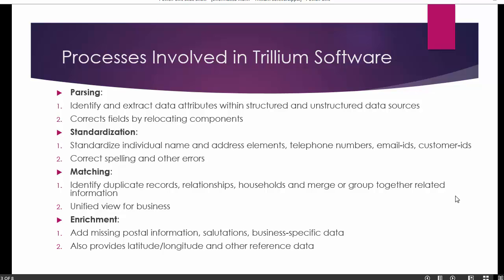The four basic processes are: first is parsing, second is standardization, third is matching, and fourth is enrichment. During the parsing process, records are identified and extracted for the data attributes. It works not only for structured data sources like RDBMS, where data is stored in rows and columns, but also for unstructured data sources like log files or text files where data is in plain text. Components are identified for both structured and unstructured data.